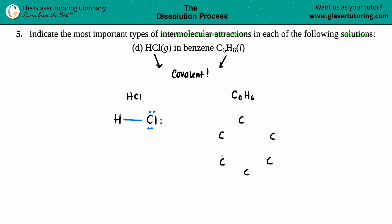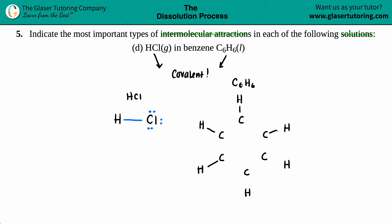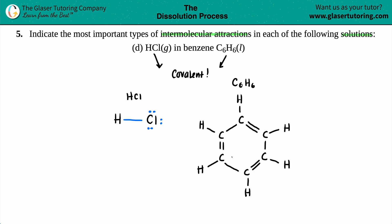Benzene has six hydrogens, one around each carbon, all with single bonds since hydrogen can only form a single bond. Around the ring, the carbon-carbon bonds alternate: single, double, single, double, single, double — a continuous loop of alternating single and double bonds. That's what benzene looks like.